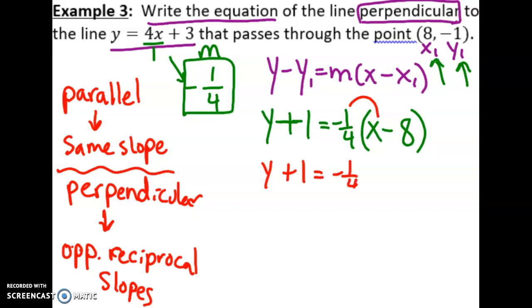Negative one-fourth times x is negative one-fourth x. Notice my slope does not change—your slope should not be changing at this point. Negative one-fourth times 8: well, a negative times a negative gives us a positive, and one-fourth of 8 is 2.